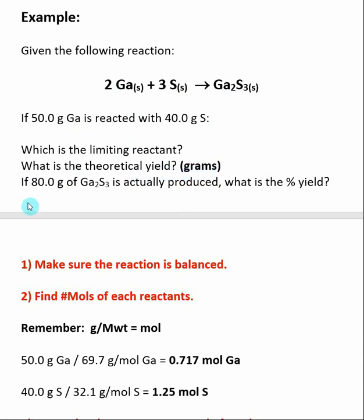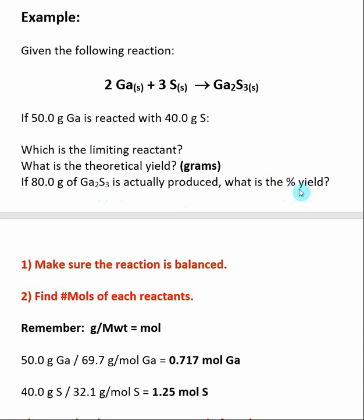In the last step, we compare our theoretical yield to an actual yield produced. If you run a reaction, one of the things we like to do is compare the amount of product you actually get to the theoretical yield — this gives us what's called a percent yield. It tells us how closely our reaction actually got to the theoretical yield, or the maximum amount of product that can be made, and helps determine the effectiveness of a reaction.